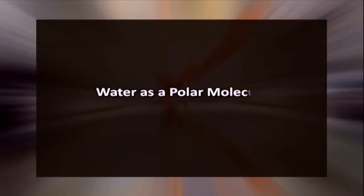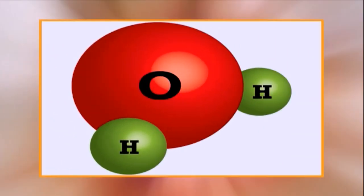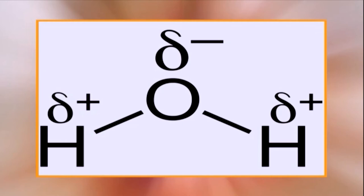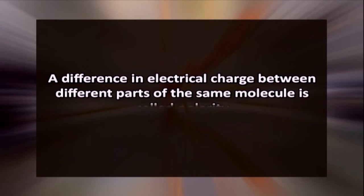Now, let's discuss water as a polar molecule. Each molecule of water consists of one atom of oxygen and two atoms of hydrogen. The oxygen atom in a water molecule attracts negatively charged electrons more strongly than the hydrogen atoms do. As a result, the oxygen atom has a slightly negative charge and the hydrogen atom has a slightly positive charge. A difference in the electrical charge between different parts of the same molecule is called polarity, making water a polar molecule.